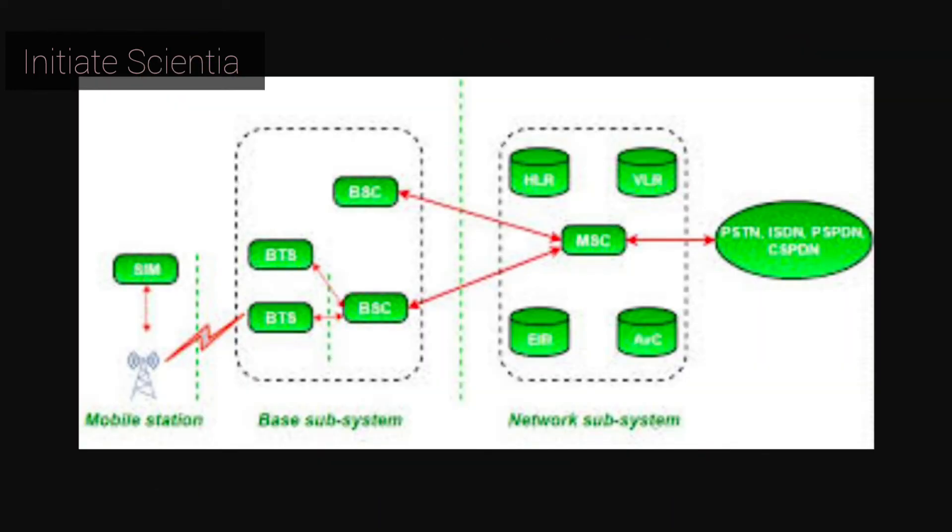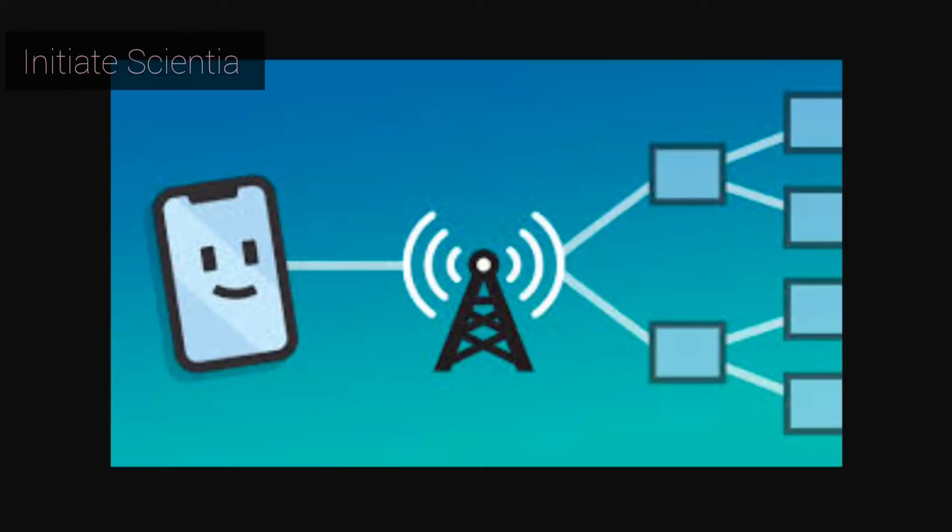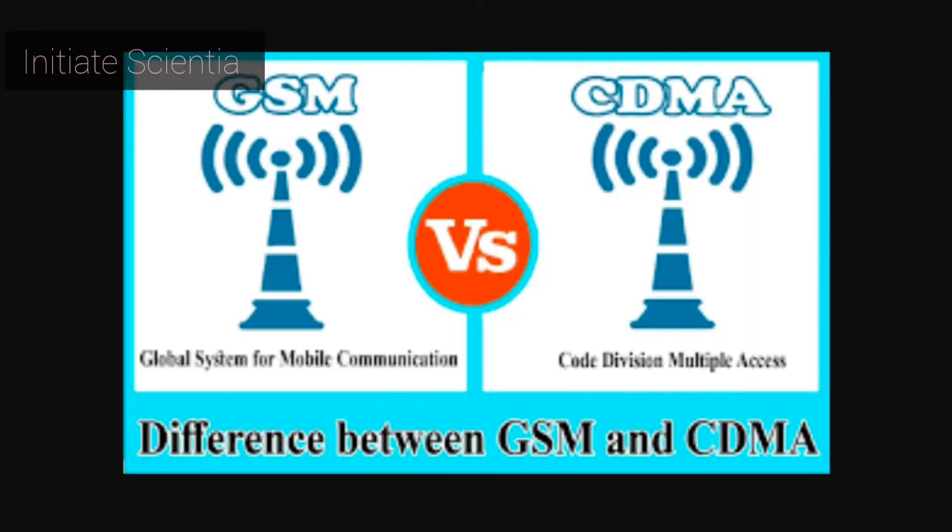Base stations, the BSS handles traffic between the cell phone and NSS. It consists of two main components, the base transceiver station BTS and the base station controller BSC.